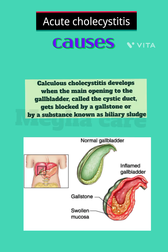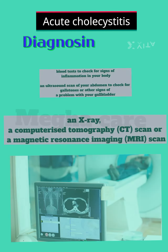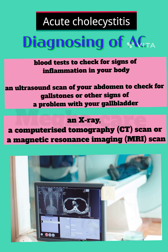Causes. Calculus cholecystitis develops when the main opening to the gallbladder, called the cystic duct, gets blocked by a gallstone or by a substance known as biliary sludge. Diagnosing acute cholecystitis involves a blood test to check for signs of inflammation in your body, and an ultrasound scan of your abdomen to check for gallstones or other signs of a problem with your gallbladder.